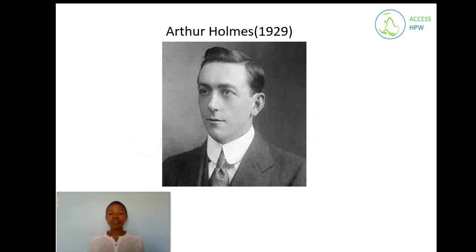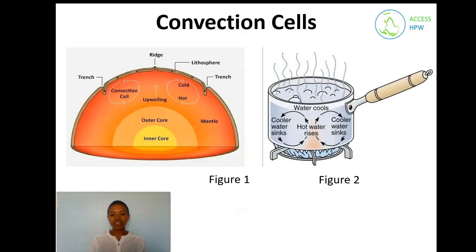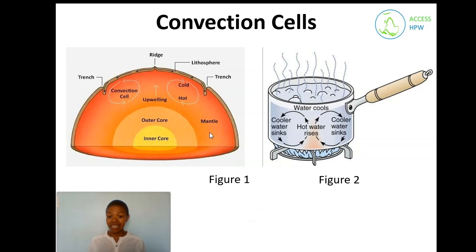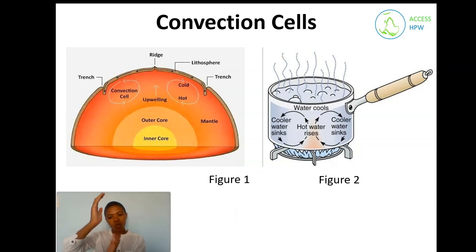We know continents drift, but what causes them to drift? Arthur Holmes, the geologist, is well known for his theory of convection cells, which states that convection occurs at the earth's mantle caused by the up-and-down movement of magma. As the core heats the magma, the hot magma becomes less dense and moves up to the crust, then cools at the top and sinks. That movement of hot magma rising and cool magma sinking causes the plates to move.